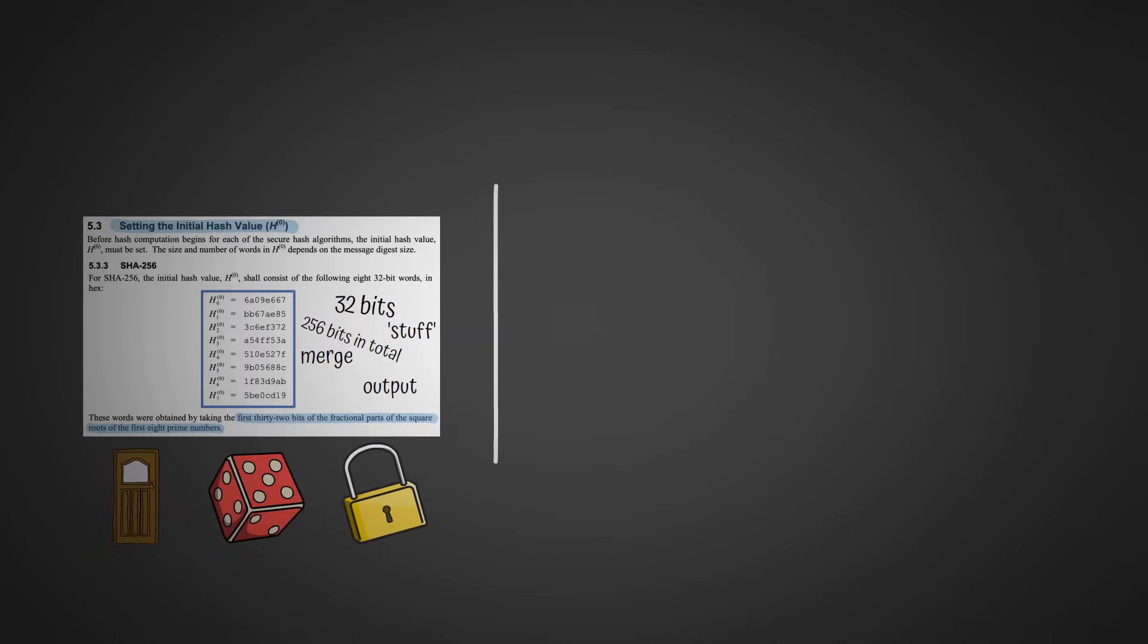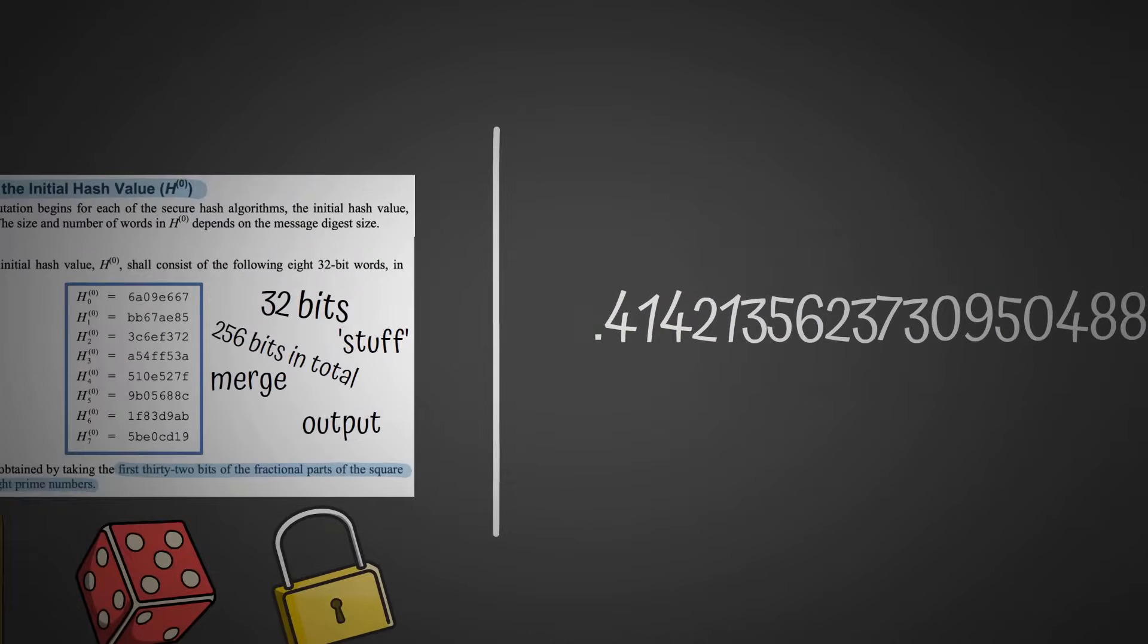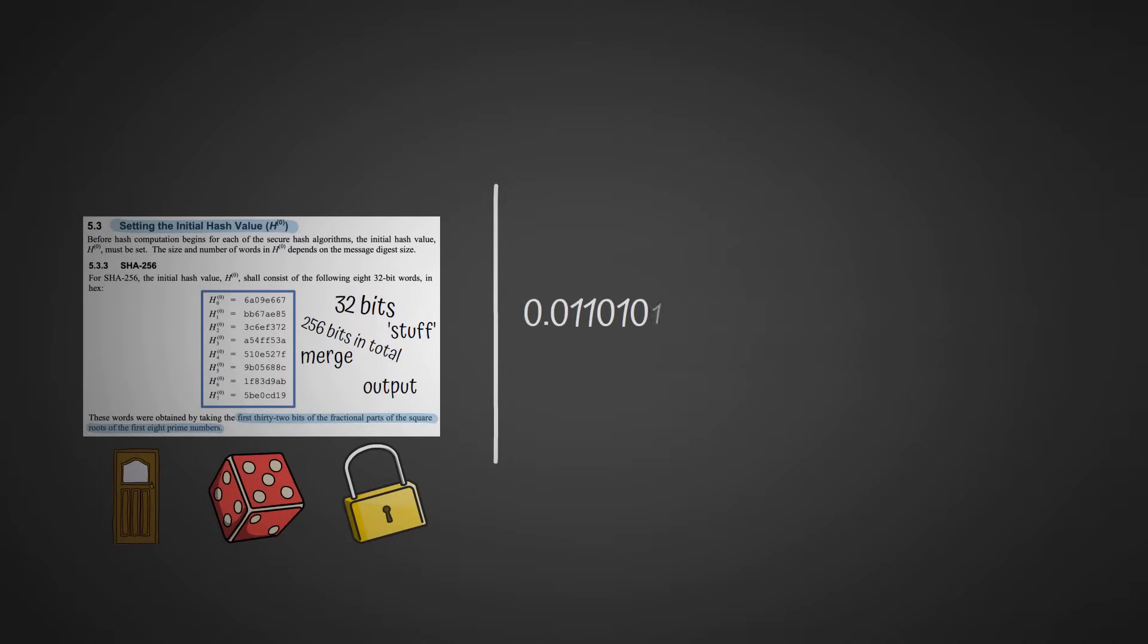The first prime number is 2. When we take its square root, we get something which looks a bit like this. Now we're going to take the fractional part of that and convert it into binary. Let's get rid of the 0 and the decimal point.